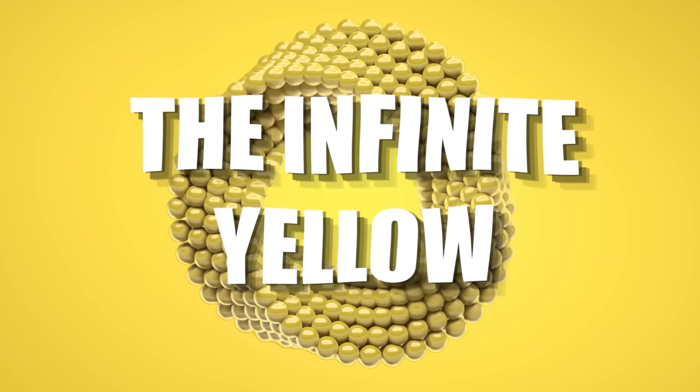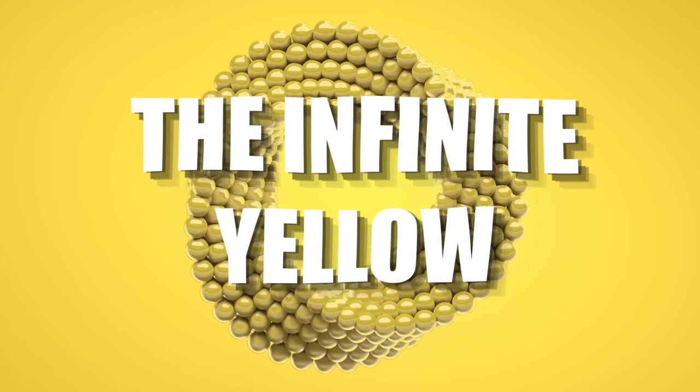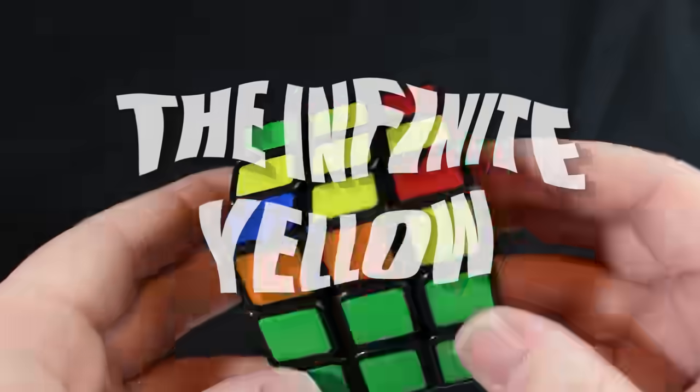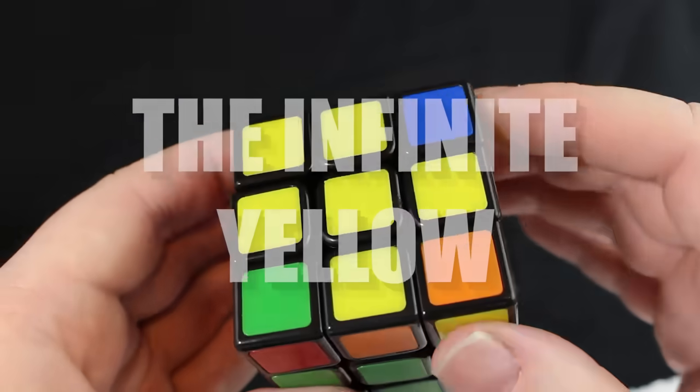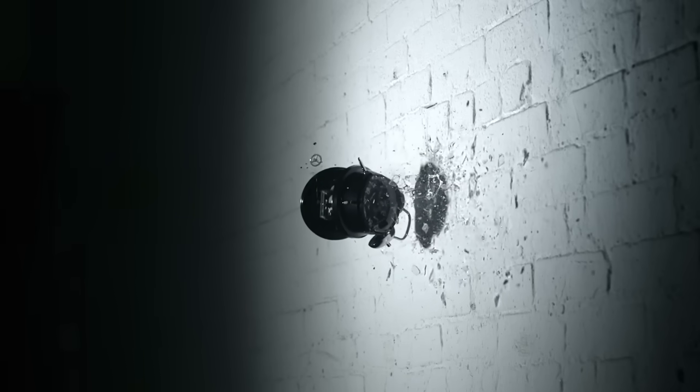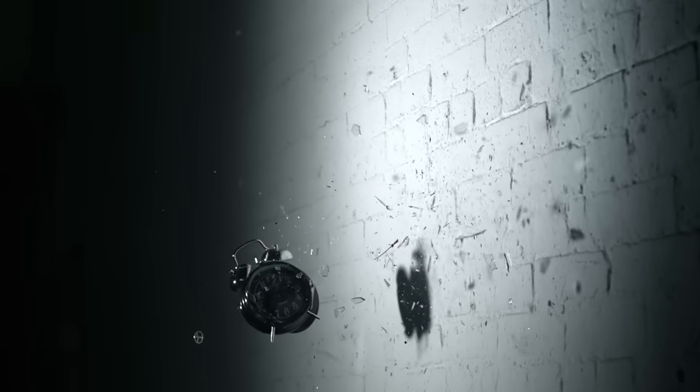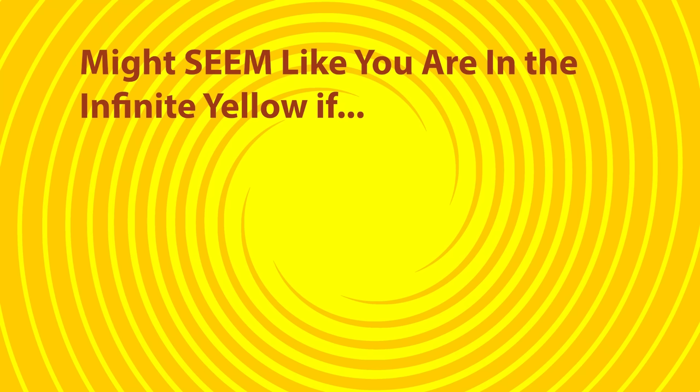And now it's time to talk about the dreaded infinite yellow. The infinite yellow is where step six loops forever. I can't say that's ever happened to me, but after many people telling me this is happening to them, it turns out that most of the time it's because their cube has been altered or broken so that it's impossible to solve. Other times it only feels like you're in the infinite yellow. It can seem like you're in the infinite yellow when these situations occur.